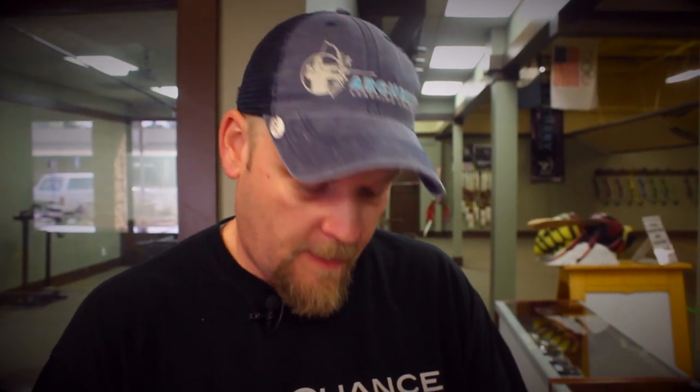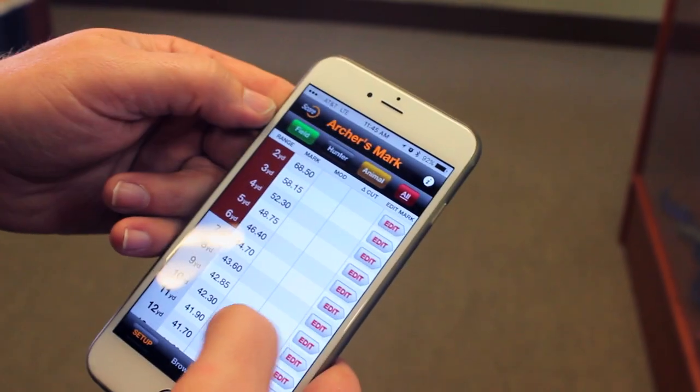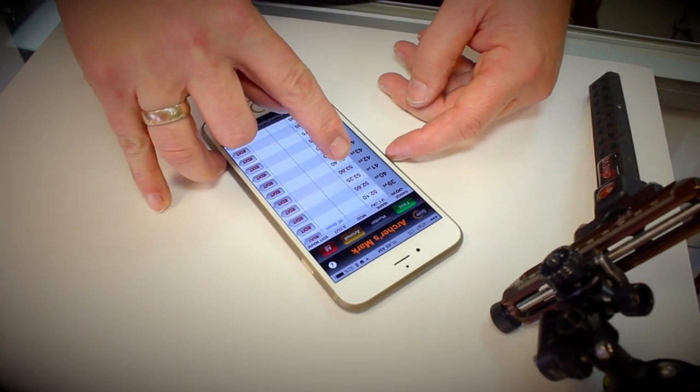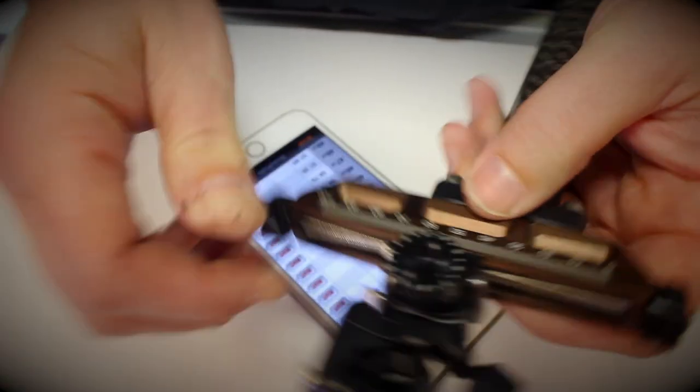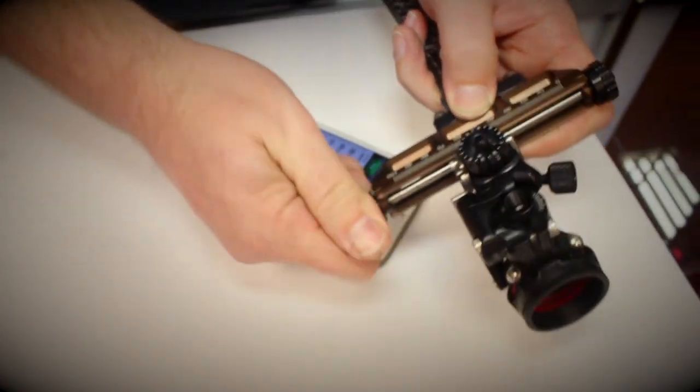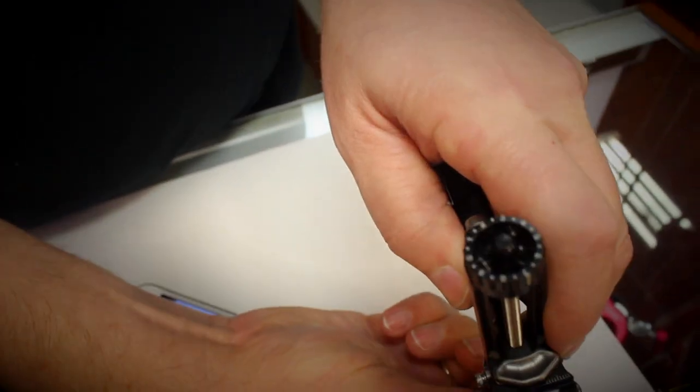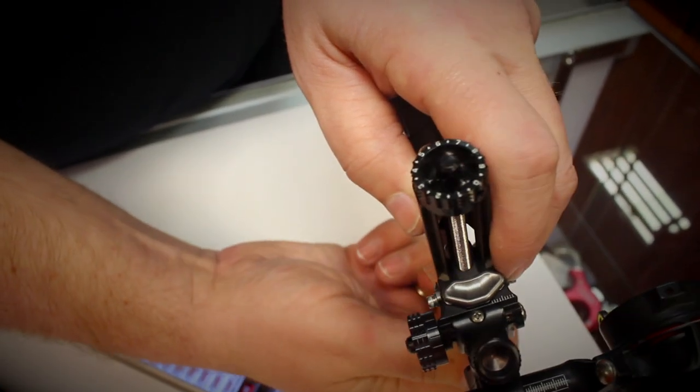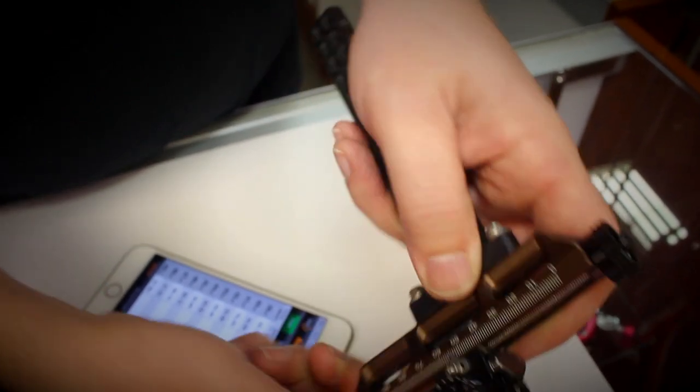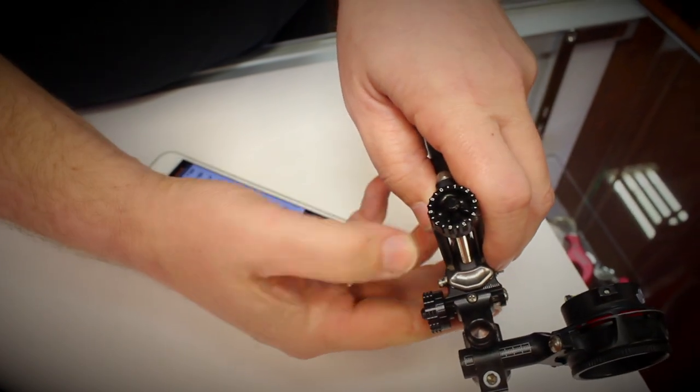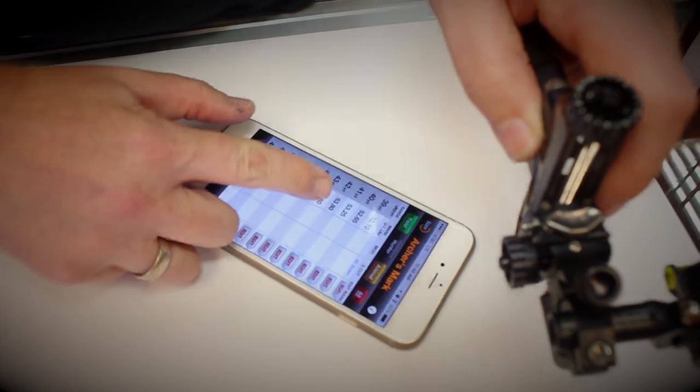So here's an example. I'm taking a look here and let's say I have range-finded a target that is 42 yards. So my site mark app says that my site needs to be on 53.8. I will slide that to a little bit above 53 and then I will turn that down to 53 and I'll watch my knob here. So there's zero and I'll roll my clicks on around here to seven, eight, 53.8. So now I have precisely set my site for 42 yards.